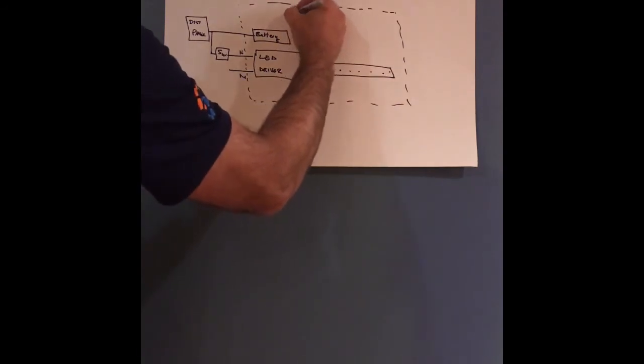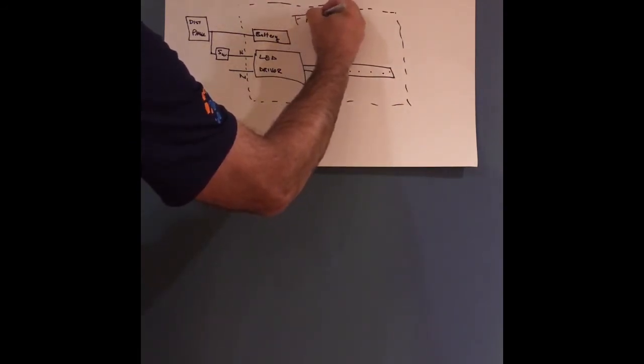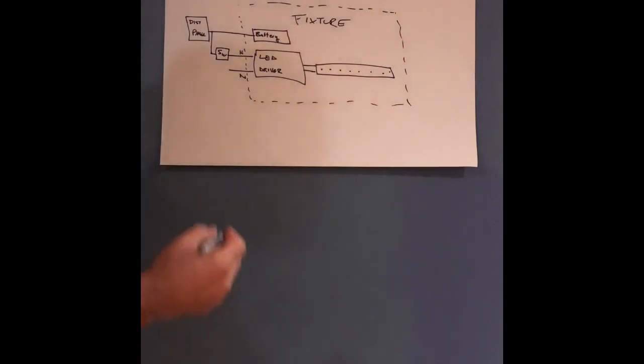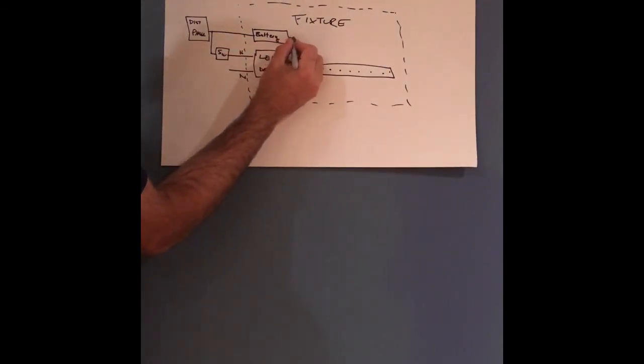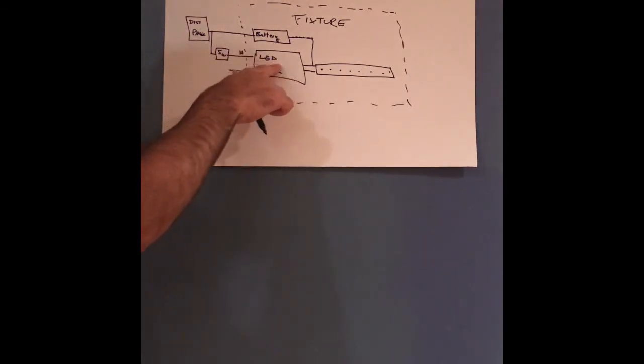That's all in the fixture. So this is where people get confused. From the battery, the battery actually has a wire here that goes right to the LEDs after the driver.